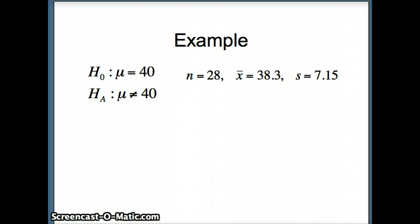We have to assume that the underlying data set is normal. Since n is small, in order for this to be fair, we must assume that this sample, 28, 38.3, 7.15, comes from a normally distributed set. Let's make that assumption so that we can continue.